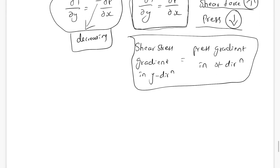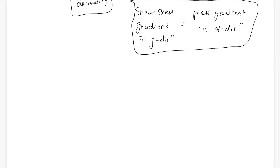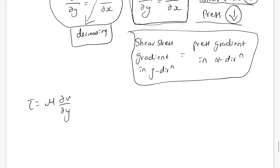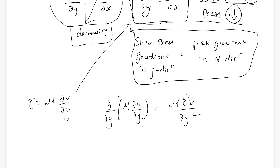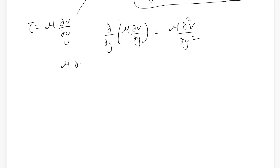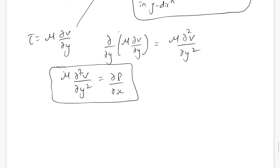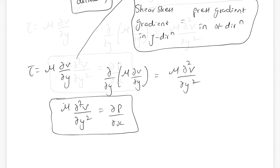Another relation we can get from this: we know that τ = μ·(∂v/∂y). Substituting this into the relation gives: μ·(∂²v/∂y²) = ∂p/∂x. This is another way of writing the relation between the shear gradient and the pressure gradient.